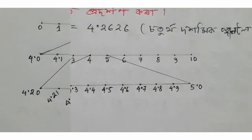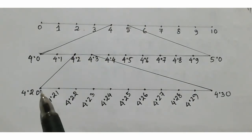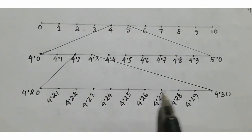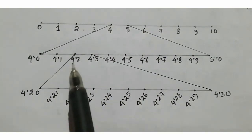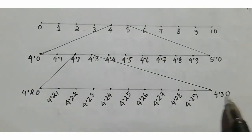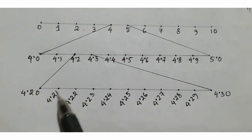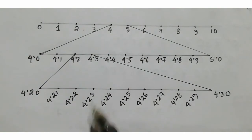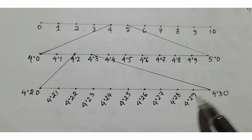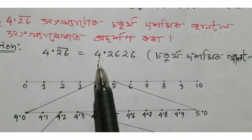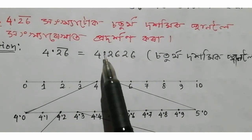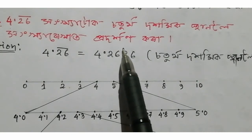4.2 and 4.3 are the most important. I will write 4.2 and 4.3, then 10 centimeters. Writing 4.20 and 4.30: 4.21, 4.22, 4.23, 4.24, 4.25, 4.26, 4.27, 4.28, 4.29, 4.30. I will write 4.2626.